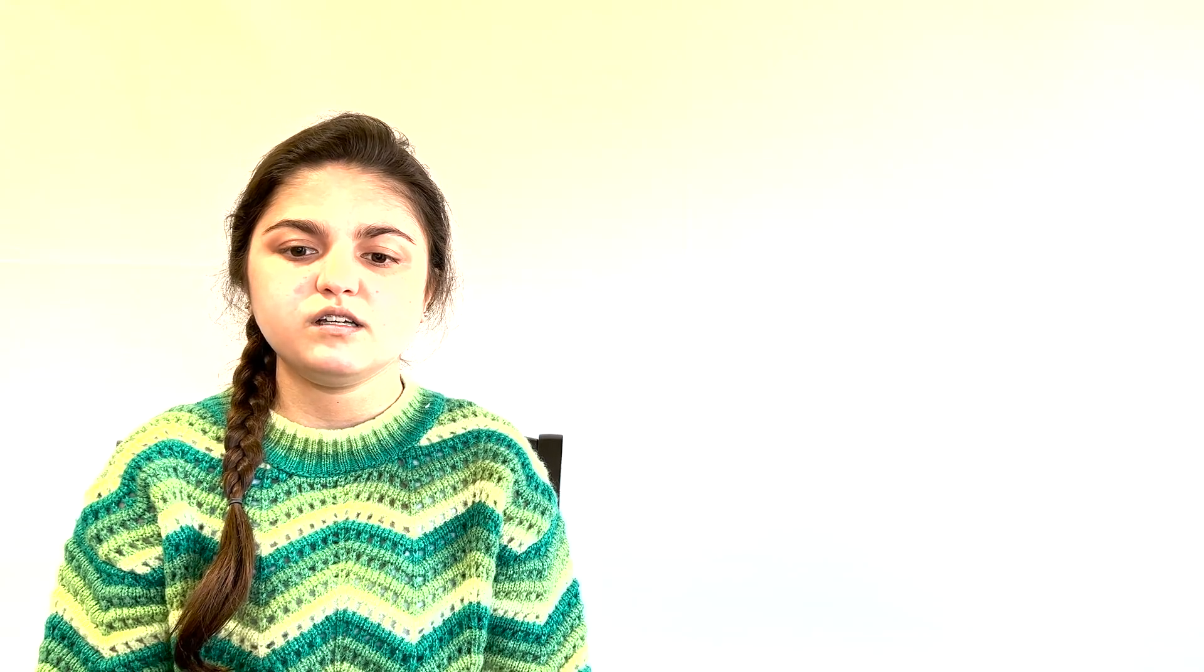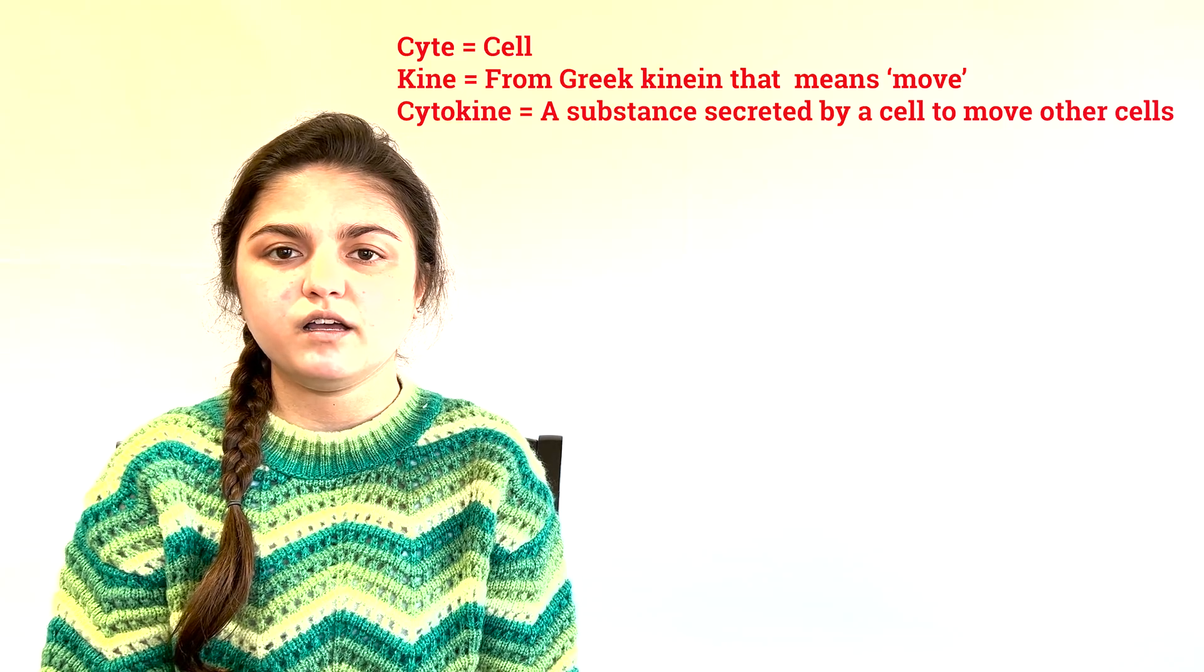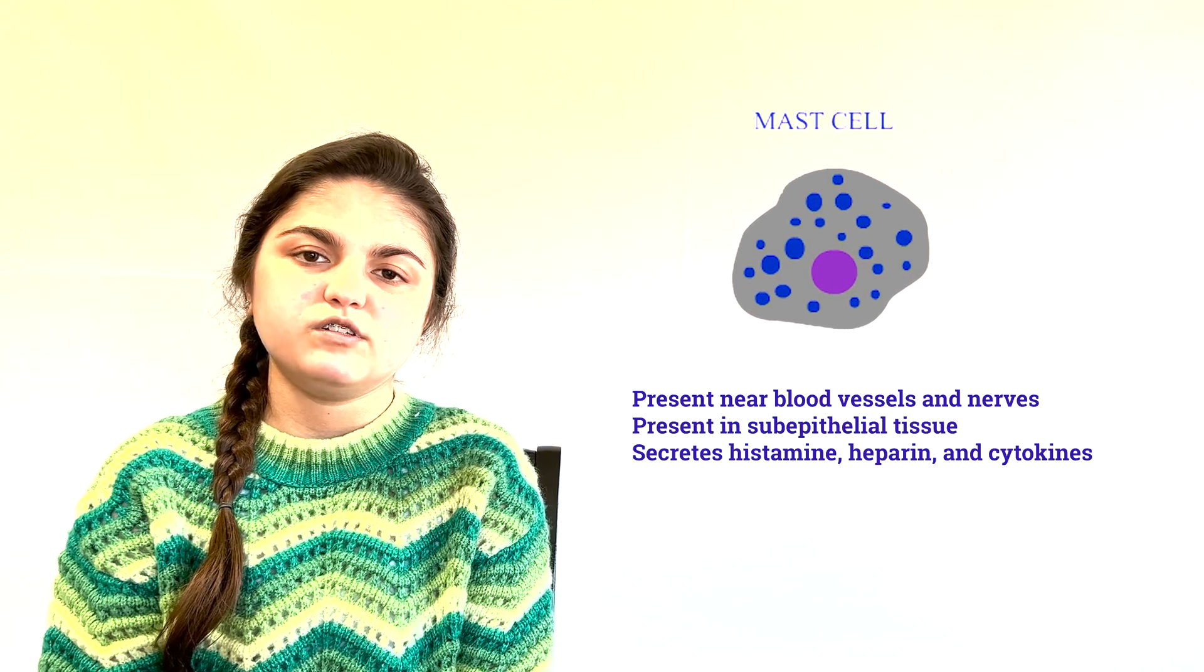If at the site of invasion by the pathogen there is not enough police, specialized cells send out messages by releasing chemicals called cytokines that travel to various parts of the body and recruit more cells of the innate immune system. The classic example of a cytokine producing cell is the mast cell. Innate lymphoid cells mentioned previously are thought to have a similar role.